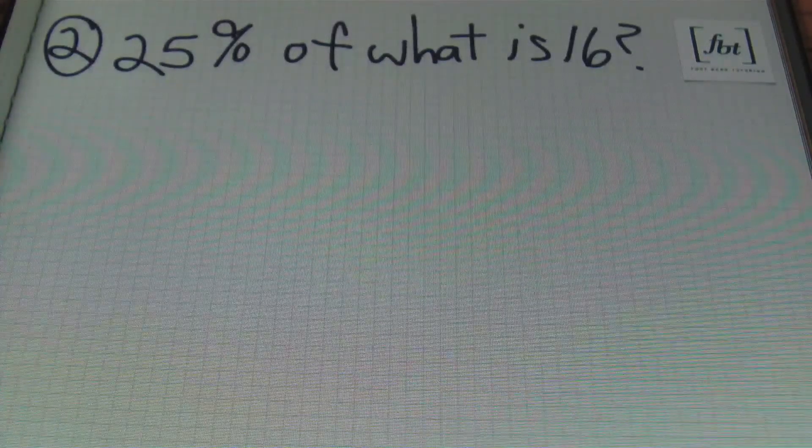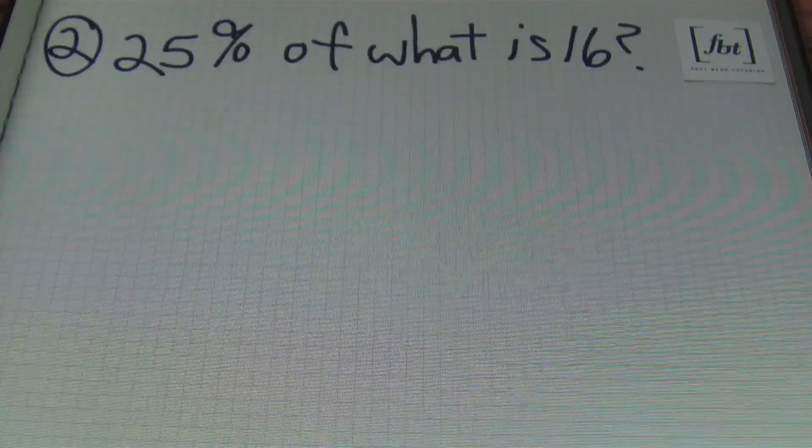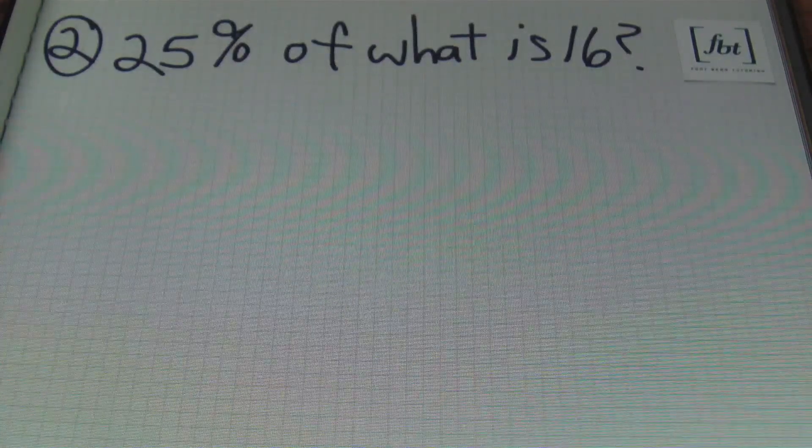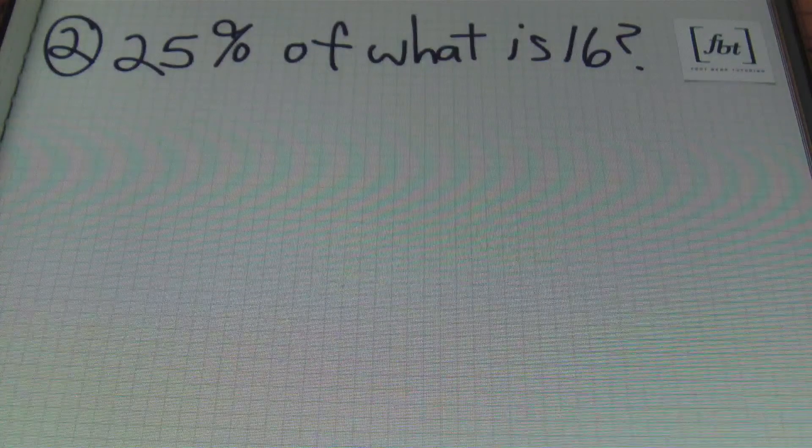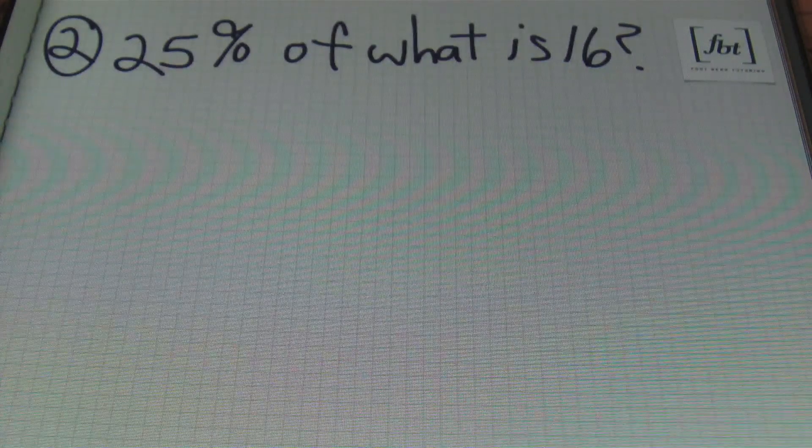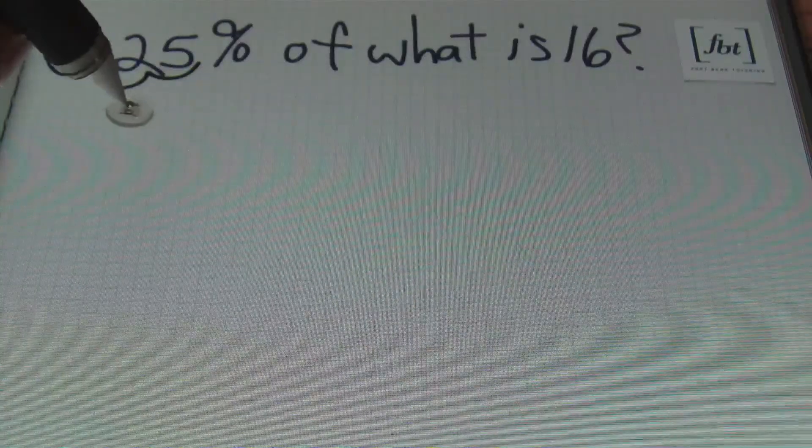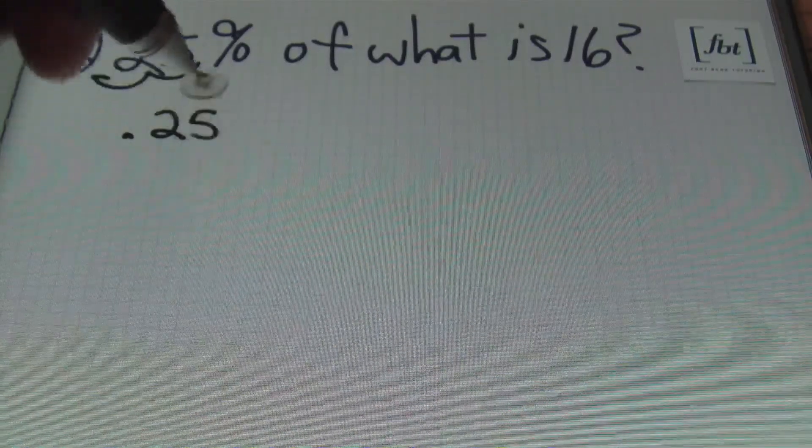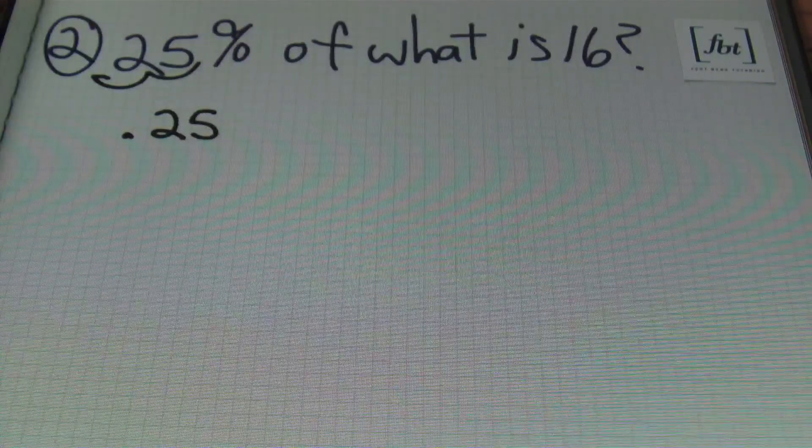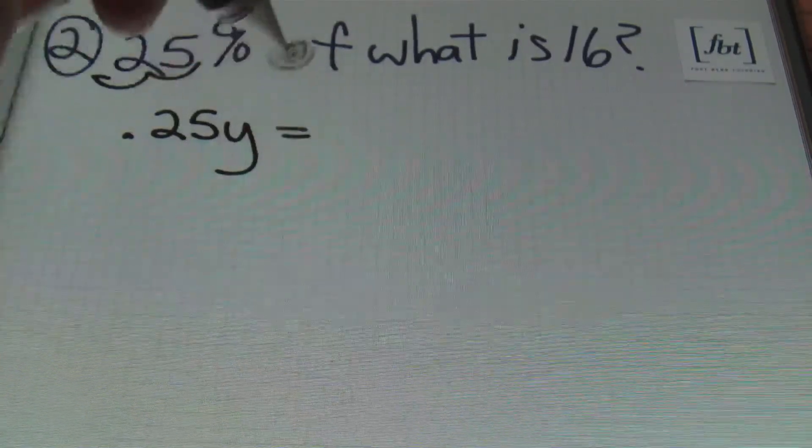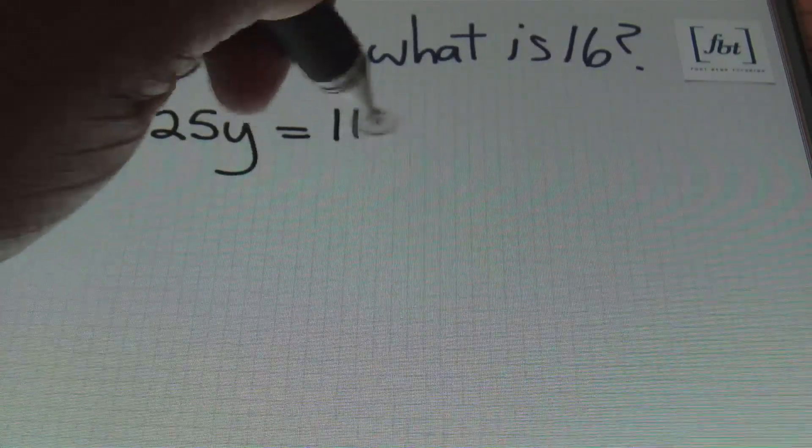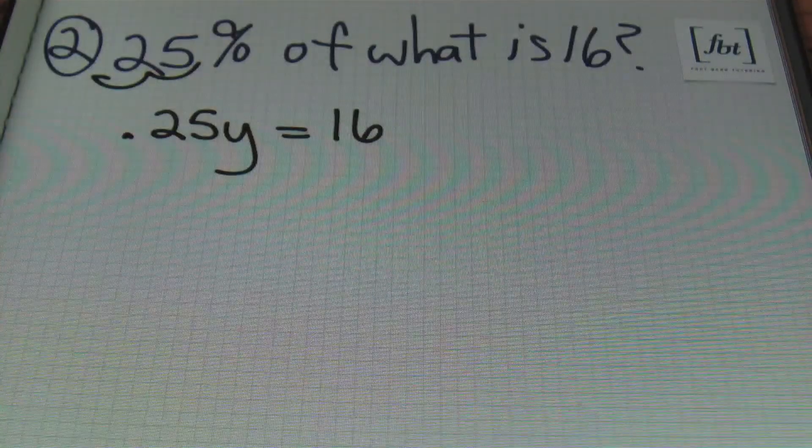That's using percent proportion. 'Is' over 'of' equals the percent over 100. So those are the two methods that we'll be talking about in this lesson today. Let's check out problem number two. For problem number two, we have 25% of what is 16. So once again, the first strategy that we'll use is algebraic translation.